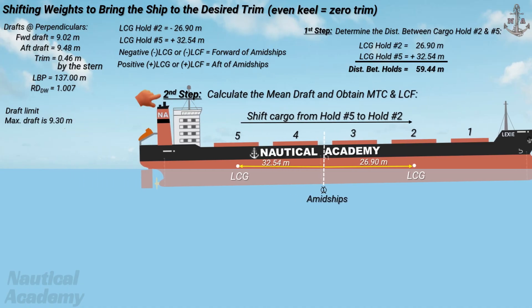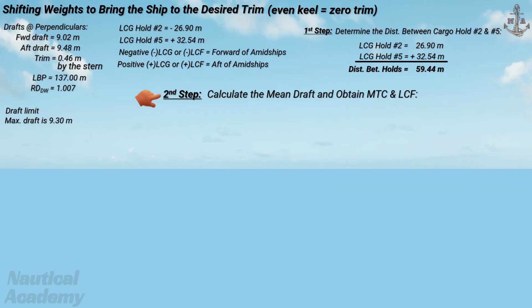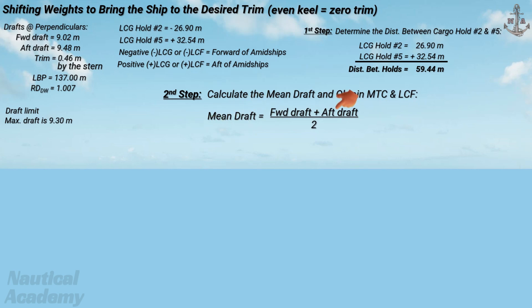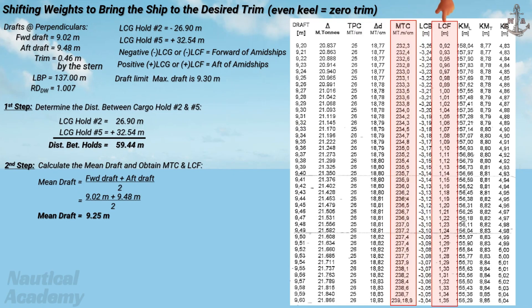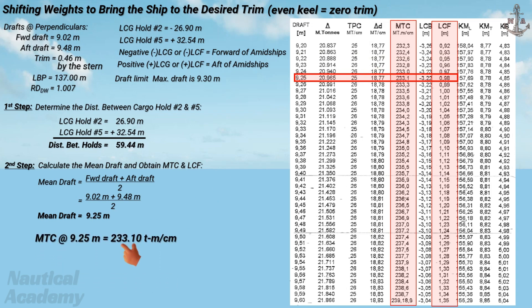Next, we calculate the ship's mean draft and use it to obtain the moment to change trim by one centimeter, or MTC, and the longitudinal center of flotation, or LCF. To determine the mean draft, simply add the forward and aft drafts and divide by two. The mean draft is 9.25 meters. From the ship's hydrostatic table, the MTC at a mean draft of 9.25 meters is 233.10 ton meters per centimeter, and the LCF is positive 0.98 meter aft of amidships, since it has a positive value.